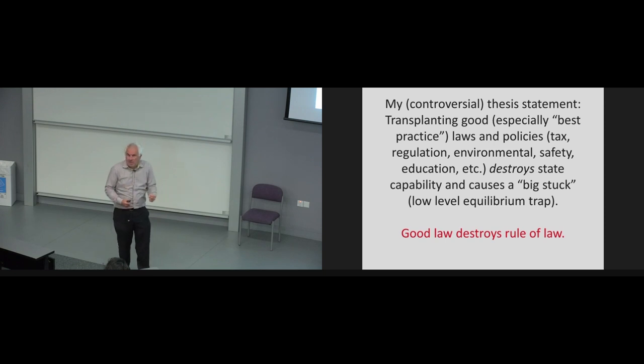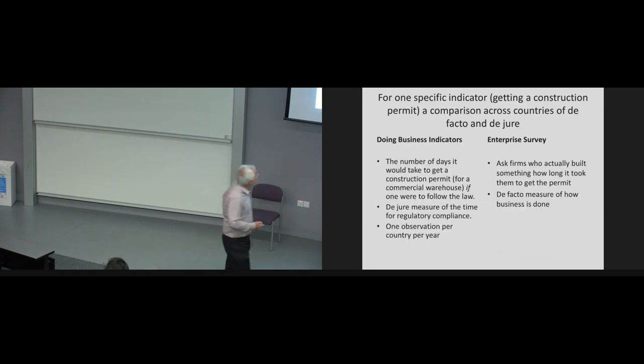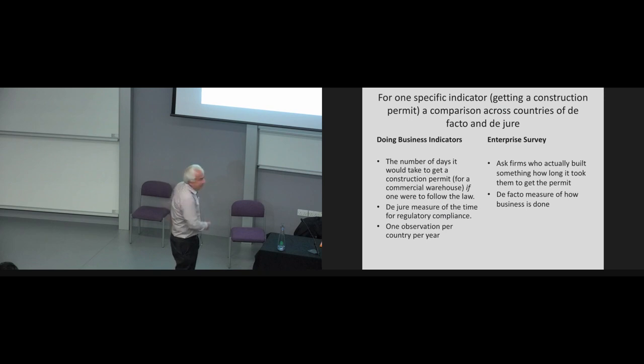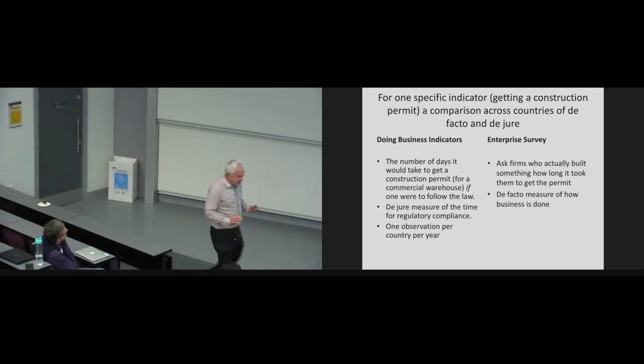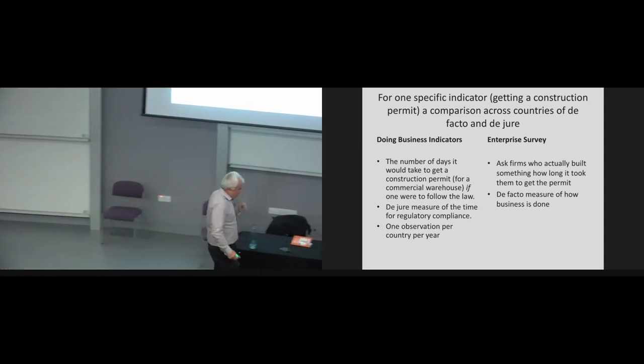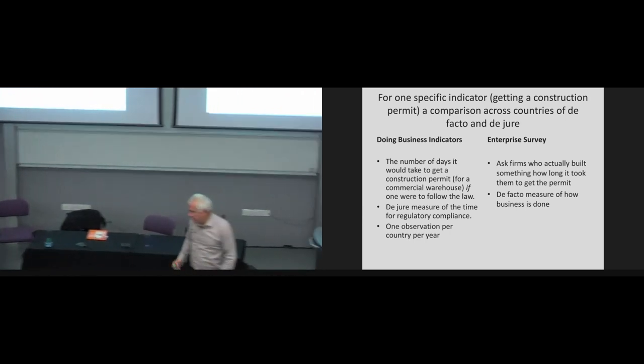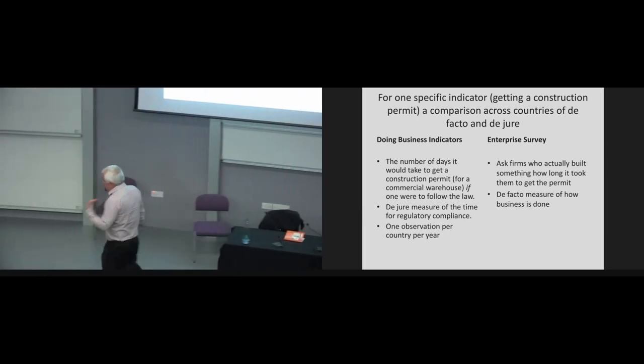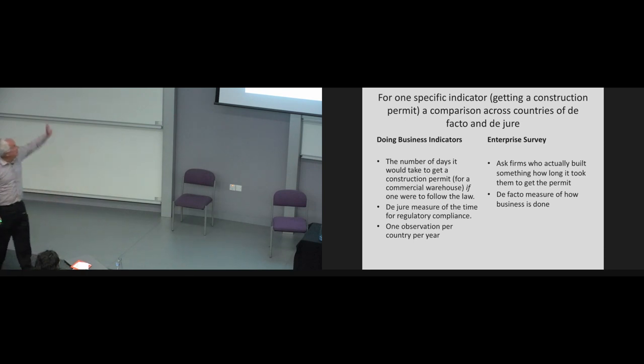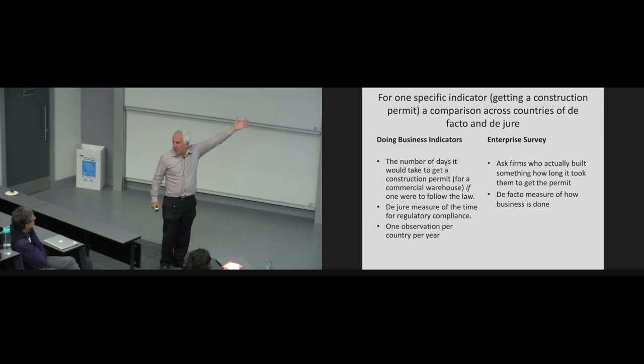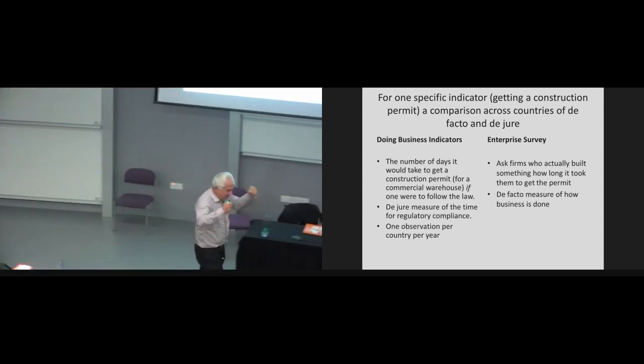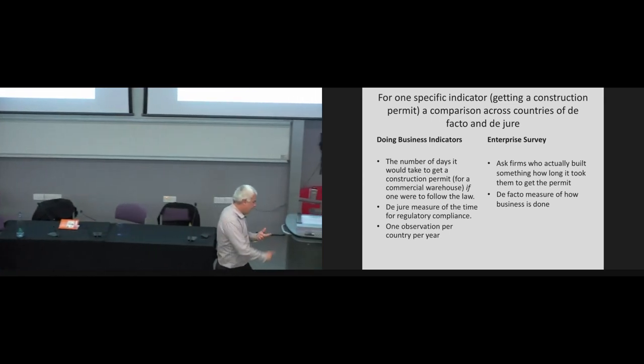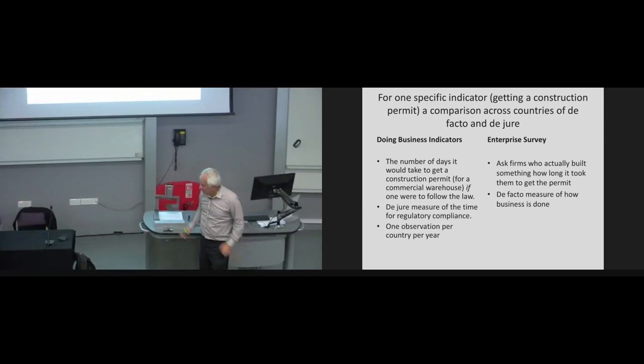Now, the hard thing about this is coming up with any evidence at all. But it turns out we can illustrate this with actual data. The World Bank created a data set called the Doing Business Indicators that tell you the number of days it would take for a given business to get a construction permit, if one were to follow the law. This is a de jure measure of the time for regulatory compliance.